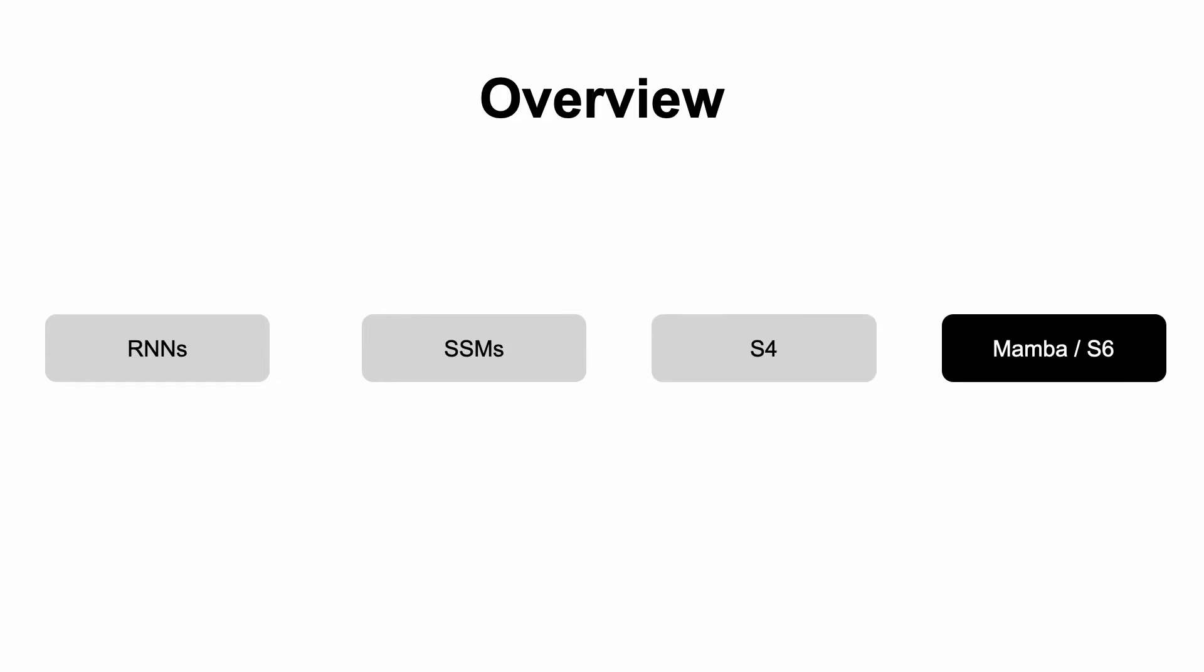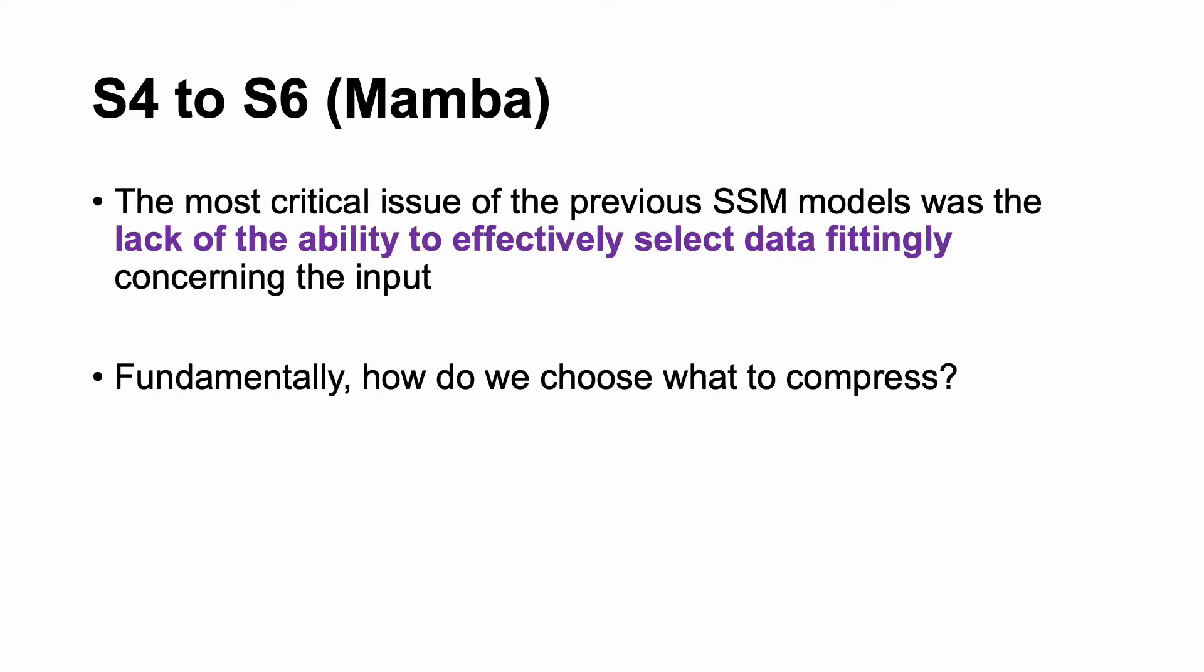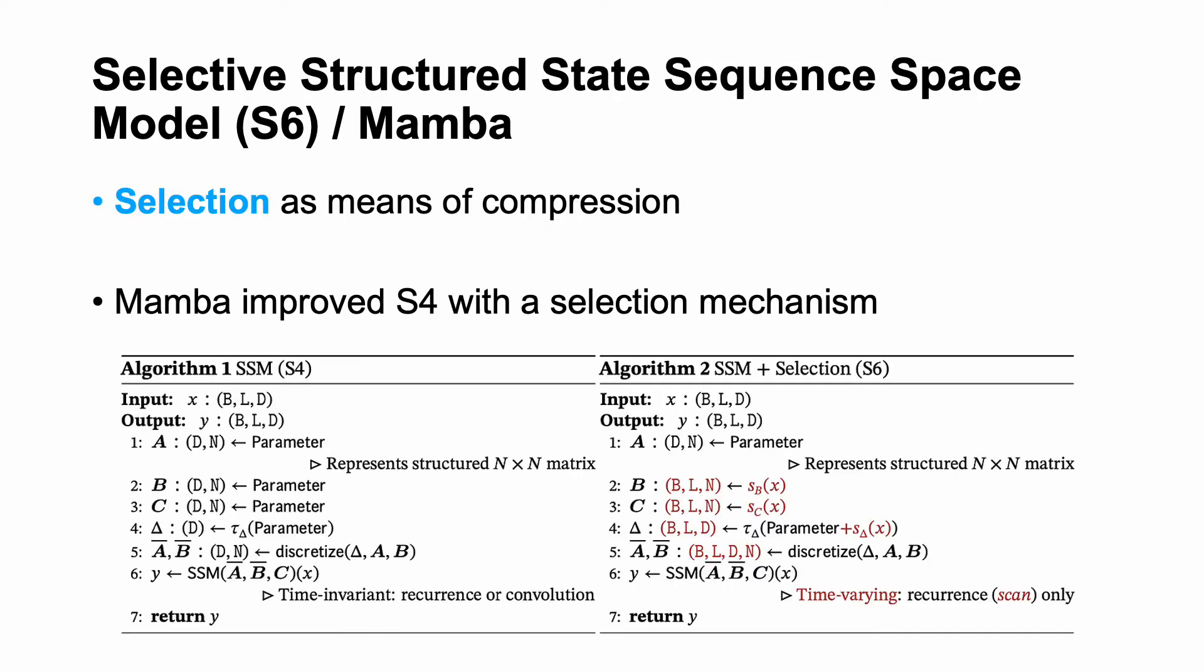Okay, moving from S4s into Mamba or S6. So now you have the foundation. The most critical issue of the previous SSM models was actually the lack of the ability to choose how to select data that was actually and most representative of the data and the inputs. And so we go back to the fundamental question about how to compress lengthy contacts efficiently without losing too much information. How do we choose what to compress?